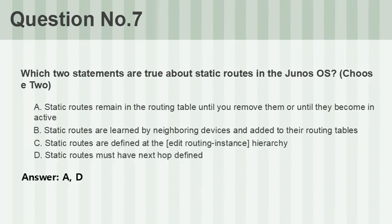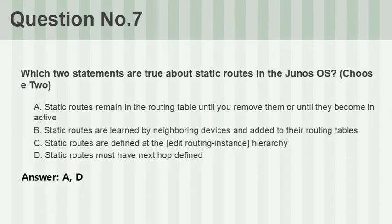Question number seven: Which two statements are true about static routes in Junos OS? Choose two. A. Static routes remain in the routing table until you remove them or until they become inactive. B. Static routes are learned by neighboring devices and added to their routing tables. C. Static routes are defined at the edit routing-instances hierarchy. D. Static routes must have a next-hop defined. Answer: A, D.